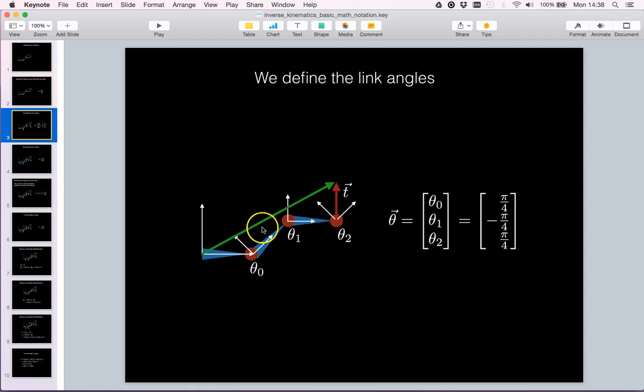For each of the links we can specify a theta value that specifies the rotation of that link. So theta 0 specifies the rotation of link 0, theta 1 the rotation of link 1, theta 2 the rotation of link 2.